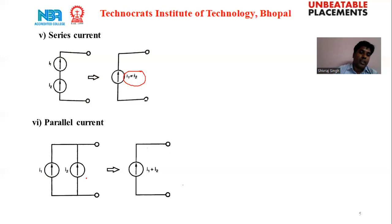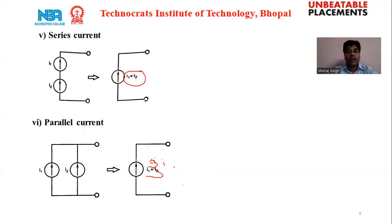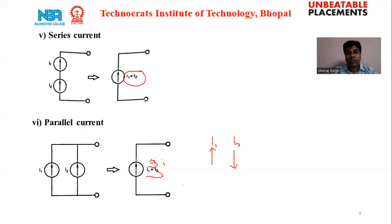The sixth rule is parallel current sources. If N number of current sources are connected in parallel, the overall equivalent current equals I1 plus I2 — both currents are added. However, if I1 and I2 are connected in opposite directions, one upward and one downward, then the overall current source I equals I1 minus I2.